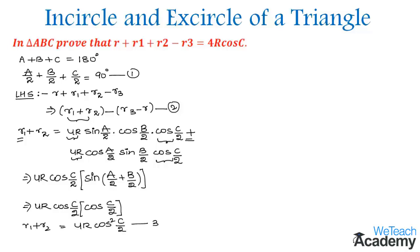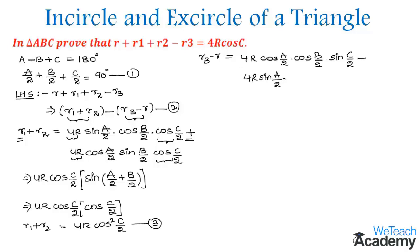Now let us consider the next term, r3 − r. Using the formula for r3: 4r·cos(A/2)·cos(B/2)·sin(C/2), minus the formula for r: 4r·sin(A/2)·sin(B/2)·sin(C/2). From both terms, 4r and sin(C/2) are common factors, giving 4r·sin(C/2) multiplied by the remaining terms.